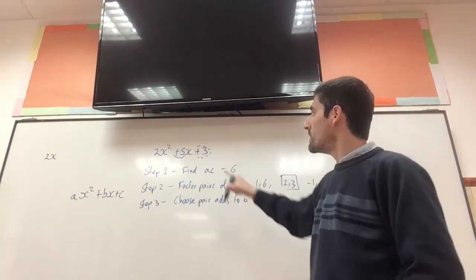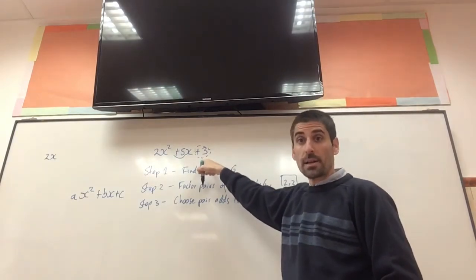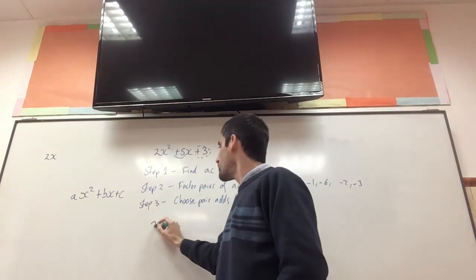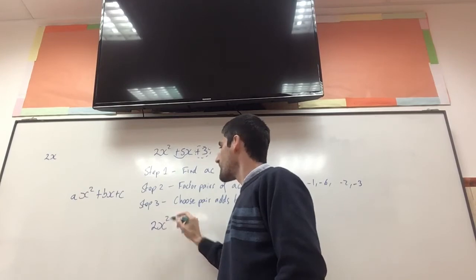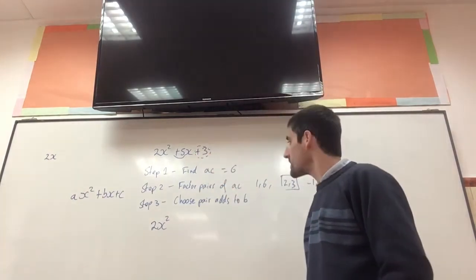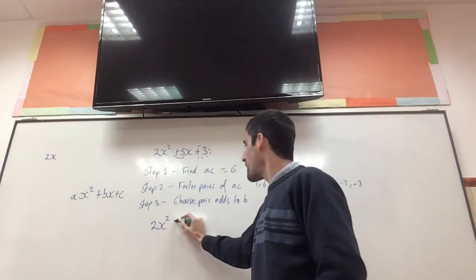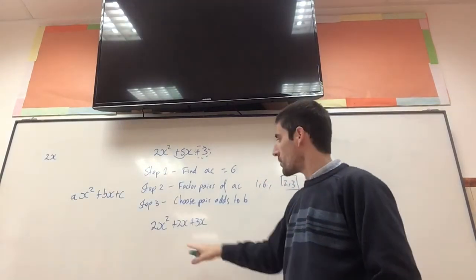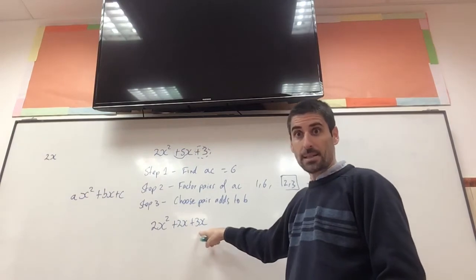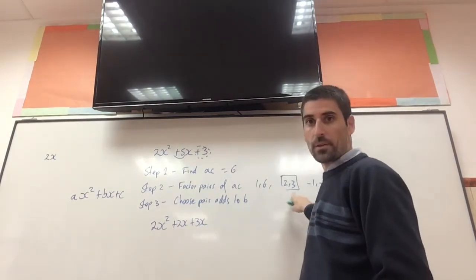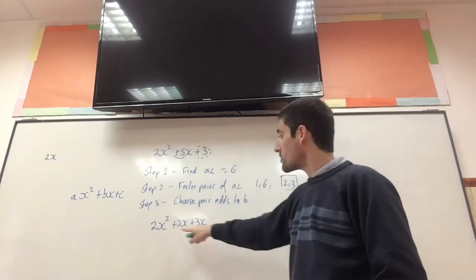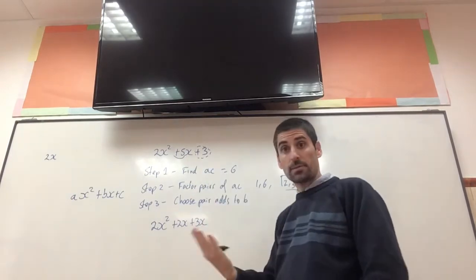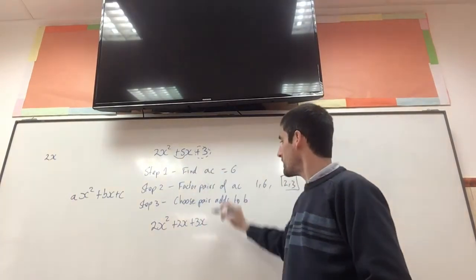Now, what we do is we're going to rewrite our original expression, 2x squared, but instead of 5x, I'm going to write plus 2x plus 3x. So where does this 2x and 3x come from, from the 2 and the 3 that we've chosen from our pair? Because 2x plus 3x is 5x. And then, plus 3.